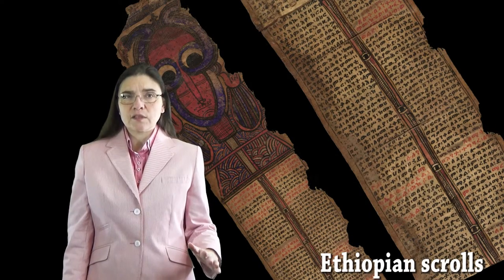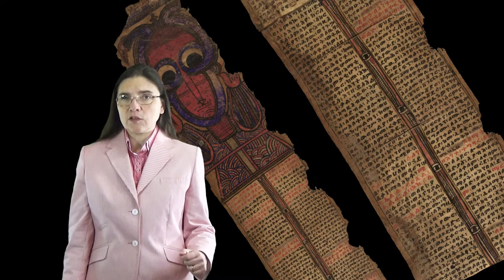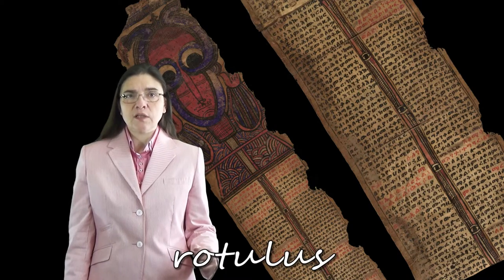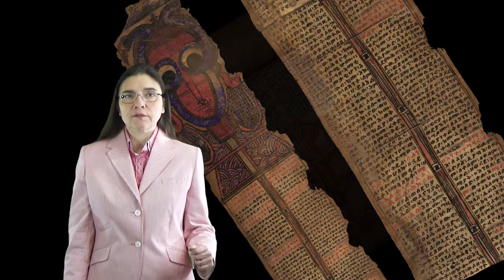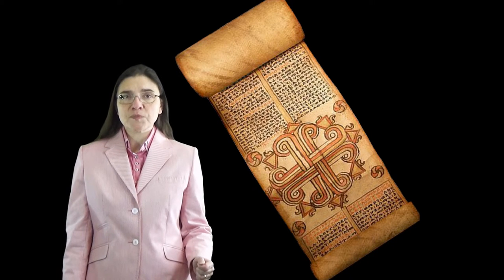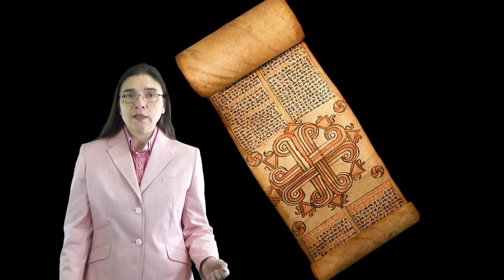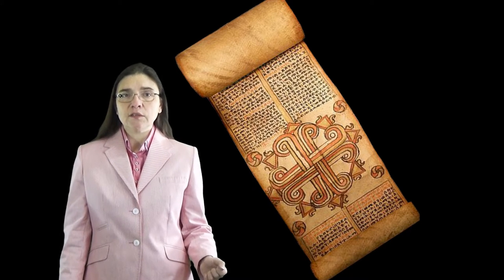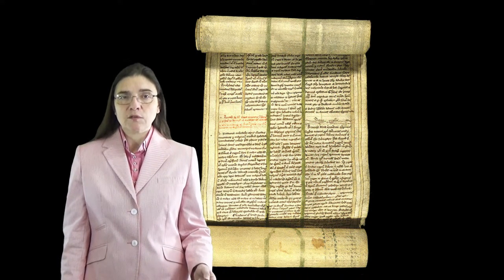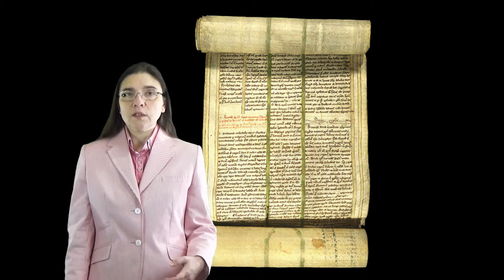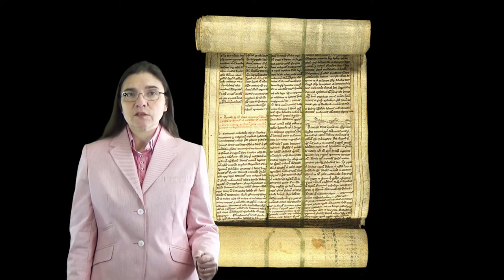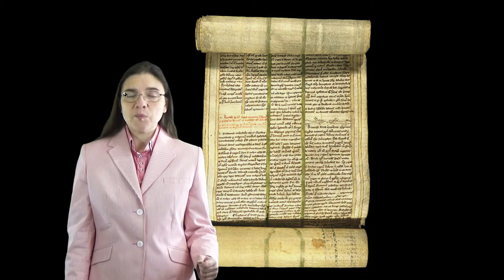When the written text runs vertically in a single column parallel to the length of the band, it is called rotulus in Latin and scroll in English. In order to read it, the reader grasped it with one hand — normally the right one — held from above the unread part, rolling it as he or she progressed, while the other hand, from below, rolled up the part already read. A good example of this type are the medieval Western scrolls and the modern Ethiopian rolls.